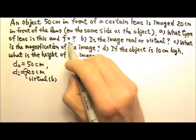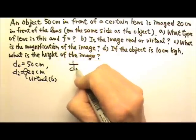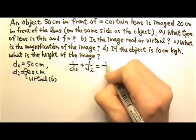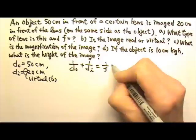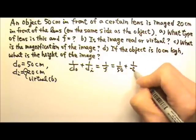To find the focal length, we can use the mirror lens equation: 1 over DO plus 1 over DI equals 1 over F. So this will be 1 over 50 plus 1 over negative 20.